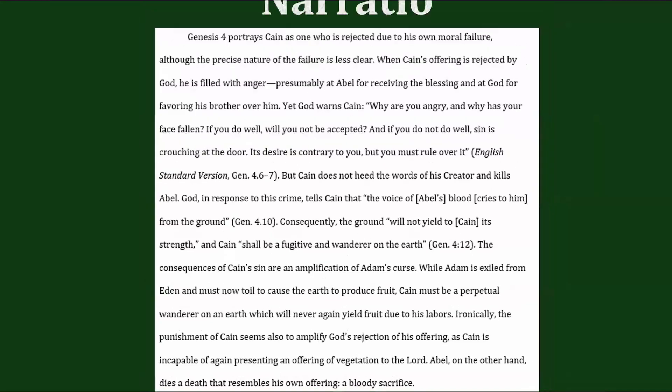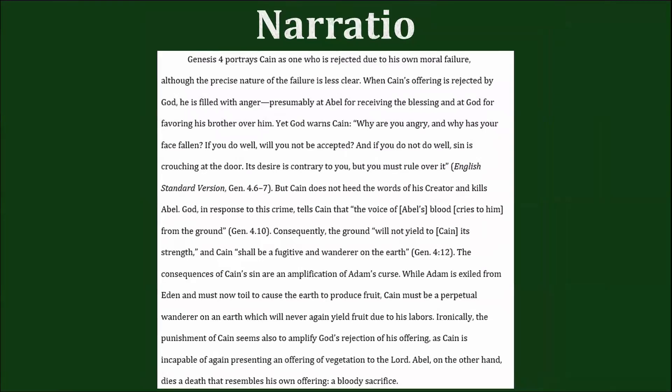Now, not every narratio is going to look like this. Maybe your narratio paragraph is going to focus on just explaining both sides of the controversy more fully if you didn't get to do that in the exordium. Maybe your narratio needs to spend more time defining key terms. My encouragement is: find a topic sentence that encapsulates the main idea. It could be the definition of a term, and then you could flesh out those definitions throughout the rest of that paragraph. Or maybe the first sentence of your narratio can explain a historical trend, summarize it, and then the rest of that paragraph can walk through that historical trend.